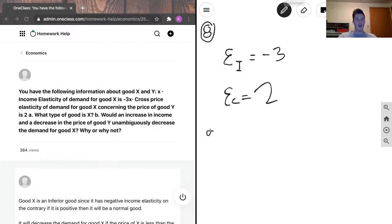So, what type of good is X? Our junior tutor has said what I'm thinking - that good X is an inferior good because the income elasticity is negative. An inferior good is a good that as your income increases, you consume less of it.